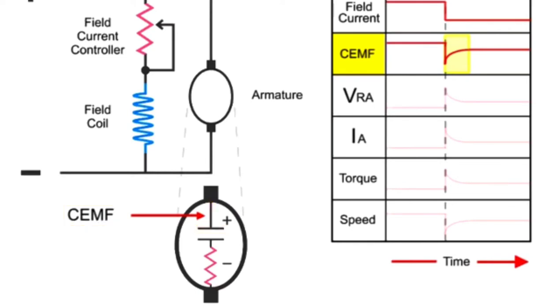This sudden change results from a reduction in the EMF generated in the armature coils which are turning within a less dense magnetic field. The less dense magnetic field is a result of the lowered field current flow.